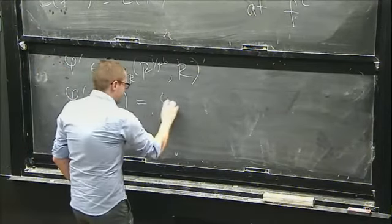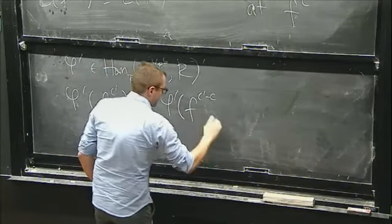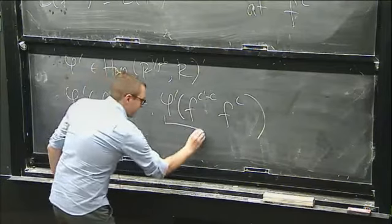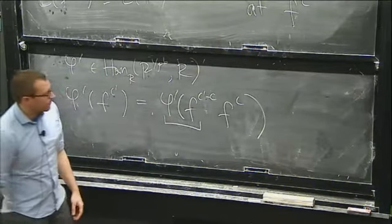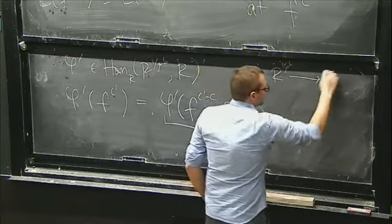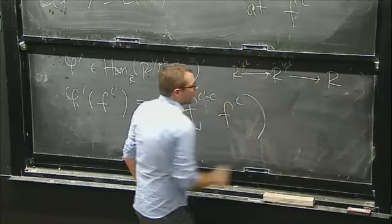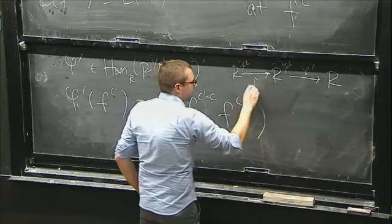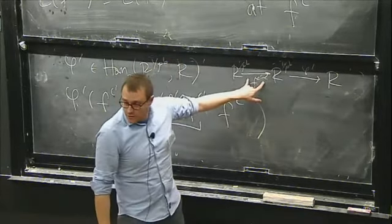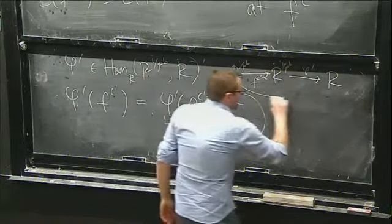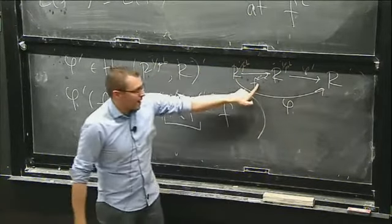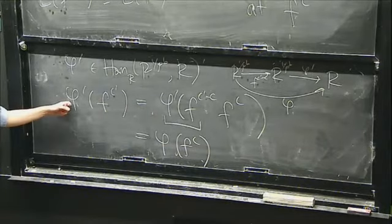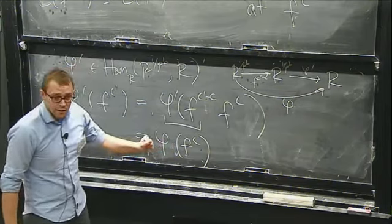If I take this φ' and look at φ'(f^{c'}), this is the same thing as writing f^{c' − c} times something. I can change f^{c'} to f^{c' − c} · f^c. The point is that f^{c' − c} can be thought of as another map from R^{1/p^b} back to itself — an R-module endomorphism. So I can define a new map which is pre-multiplication by f^{c' − c}.